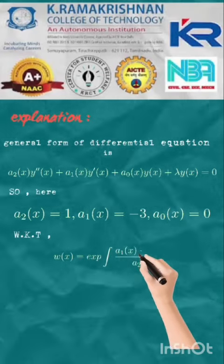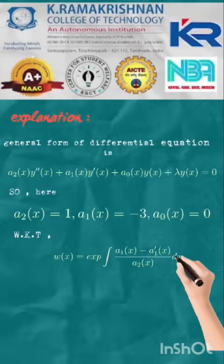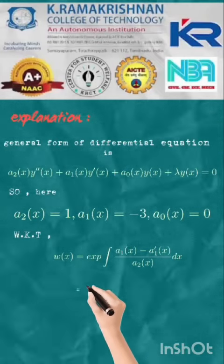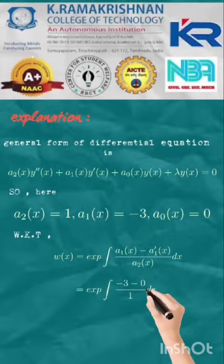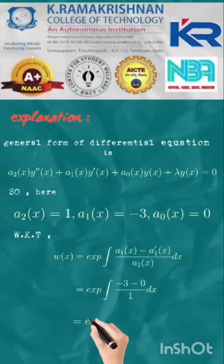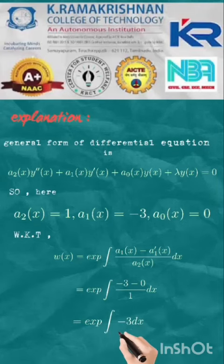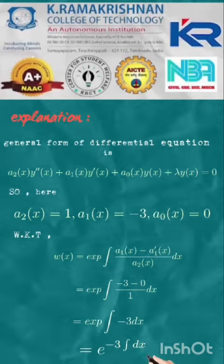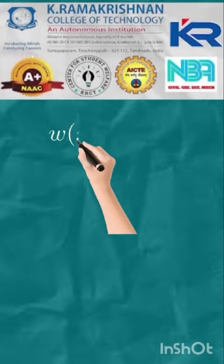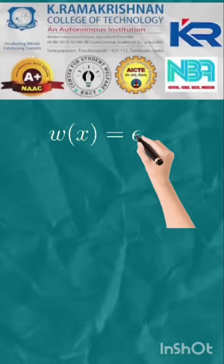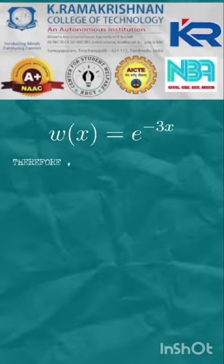We know that w of x is equal to exponential integral of a1 of x minus a1 dash of x divided by a2 of x into dx, which is equal to exponential integral minus 3 minus 0 by 1 into dx, equal to e power minus 3 integral of dx. w of x is equal to e power minus 3x.